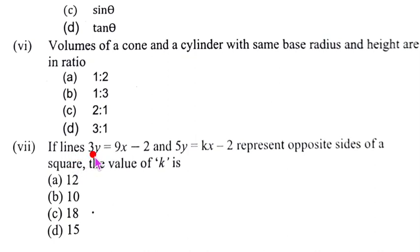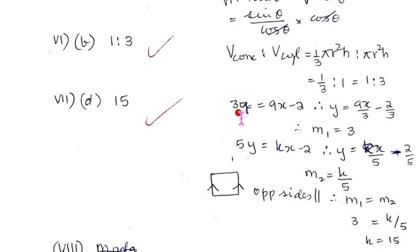Question number 7. Lines this and this they represent the opposite sides of a square. Now opposite sides of a square they are going to be parallel to each other, correct? Which means the slope of this line and the slope of this they are going to be equal. So let us see how we work it out.